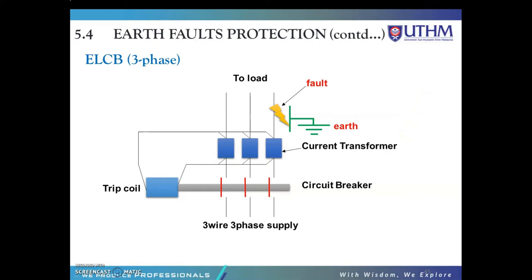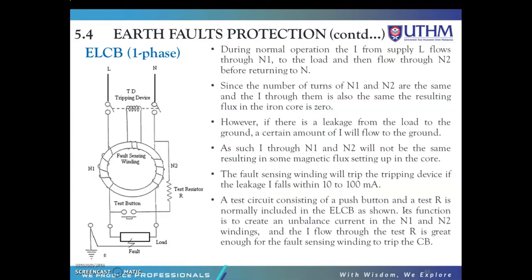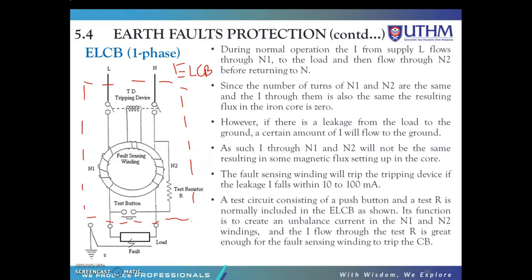This figure shows the ELCBs for three-phase connection. Next is the operation of the current ELCB for the single-phase system. This is the diagram of the current ELCB. During normal operation, the current from supply L flows through N1 to the load, and then flows through N2 before returning to the neutral. This is a current transformer.